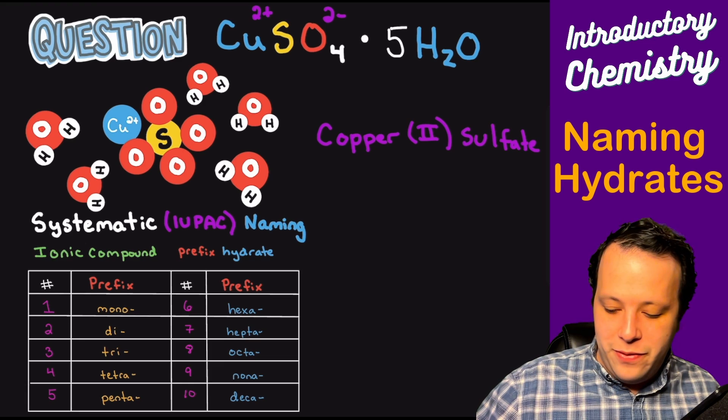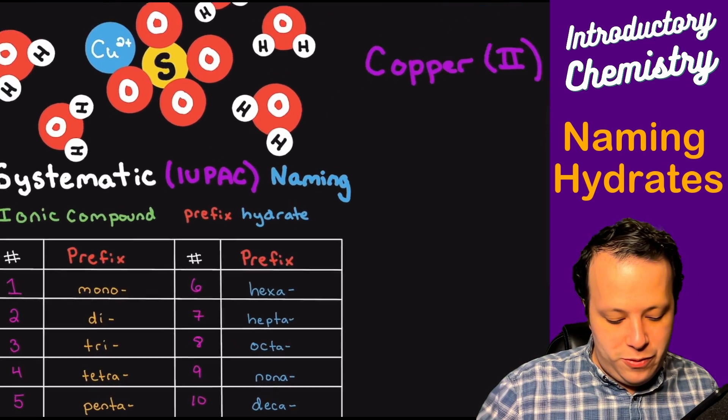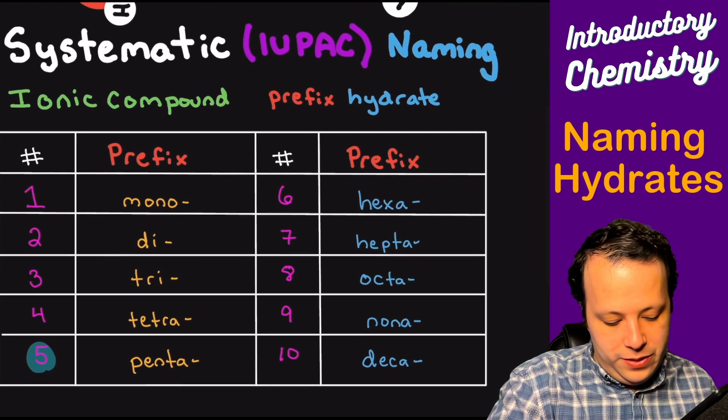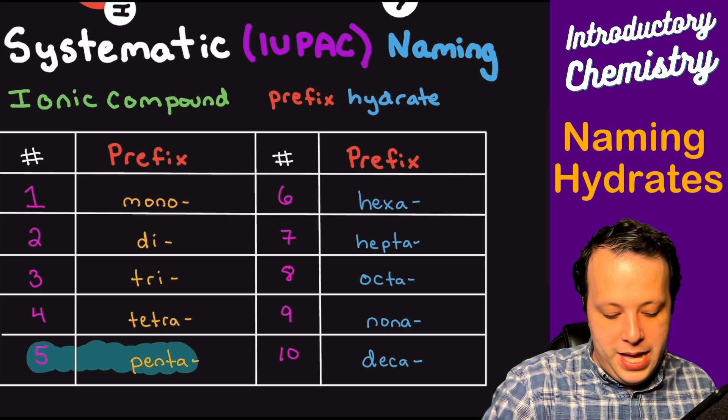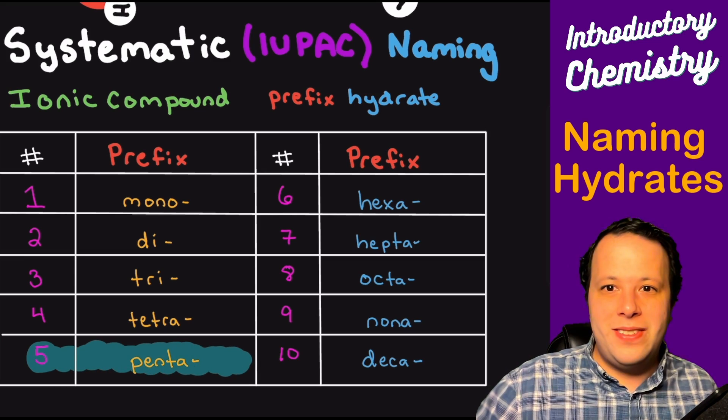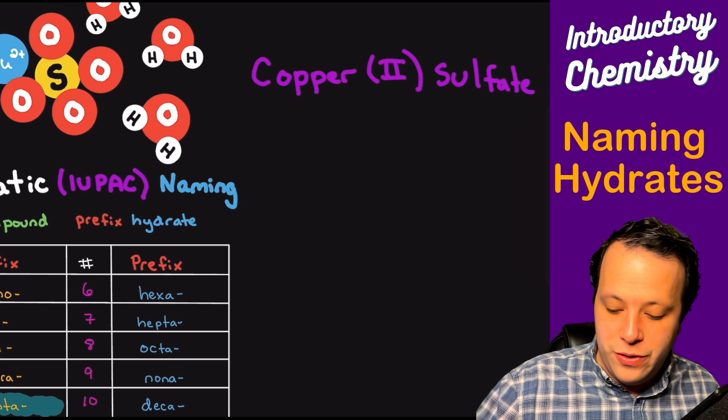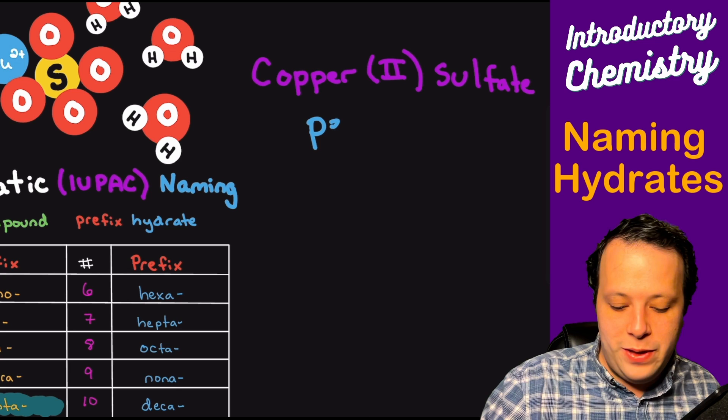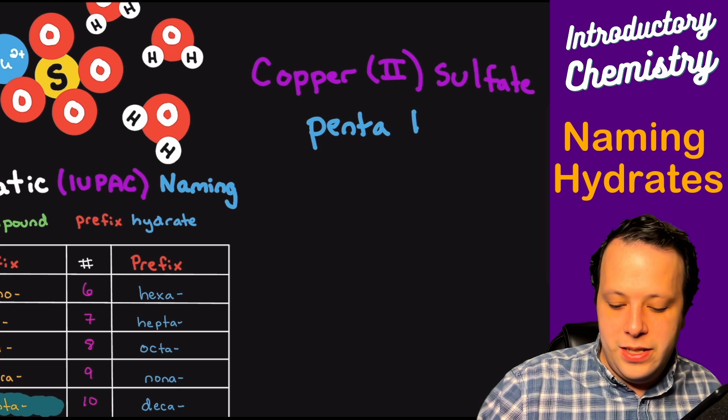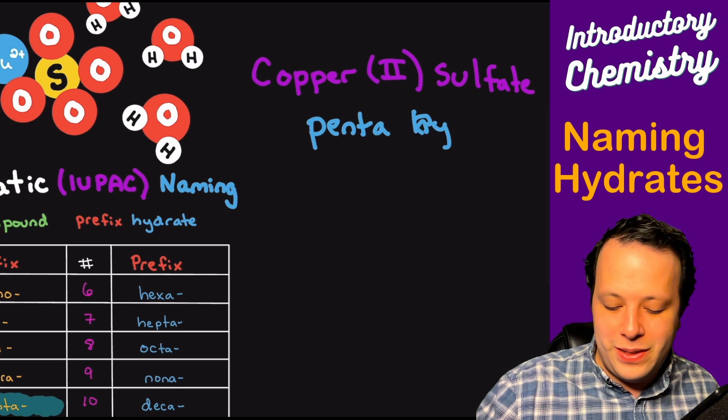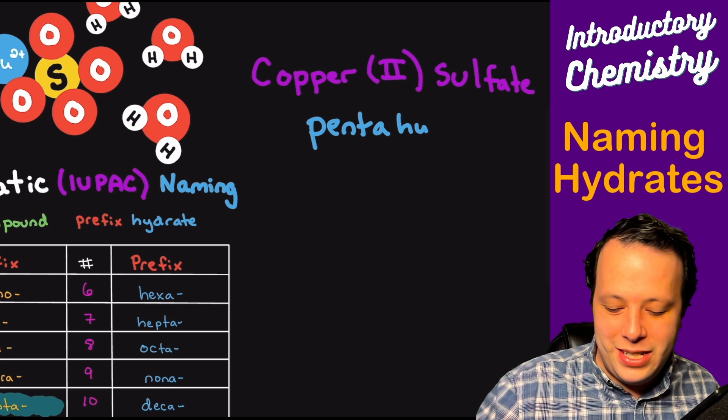And being that we have five waters, we're going to use our prefixes here. So we go down to the bottom, and we can see that penta is five. So we're going to have copper sulfate pentahydrate is going to be my name for this molecule. Okay, so copper sulfate pentahydrate.